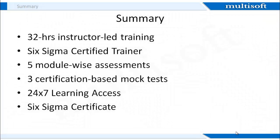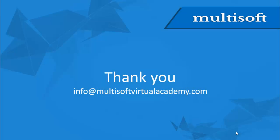That's all for today's session. Let's summarize what we covered. There will be a total of 32 hours of instructor-led training by a Six Sigma certified trainer. In addition, you will get access to five module-wise assessments and three certification-based mock tests. Multisoft will give you access to a 24 by 7 online resource centre that will have course-related presentations and other training material. After the course completion, you will get a Six Sigma certificate that will certify you as a Greenbelt professional. To enroll for the training or to post any query, please write to us at info@multisoftvirtualacademy.com.